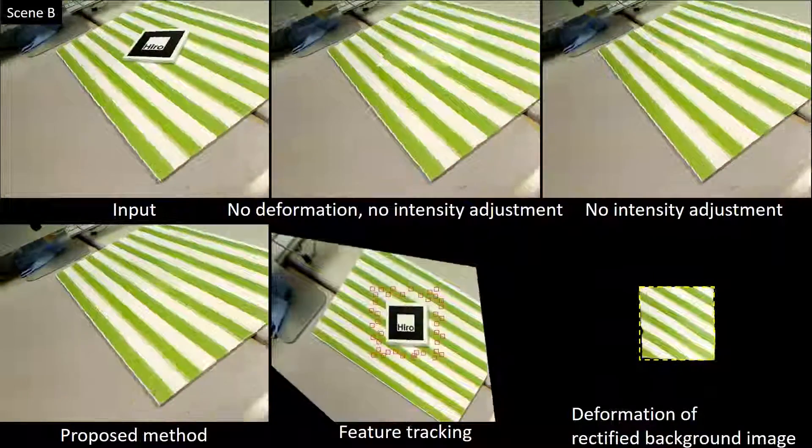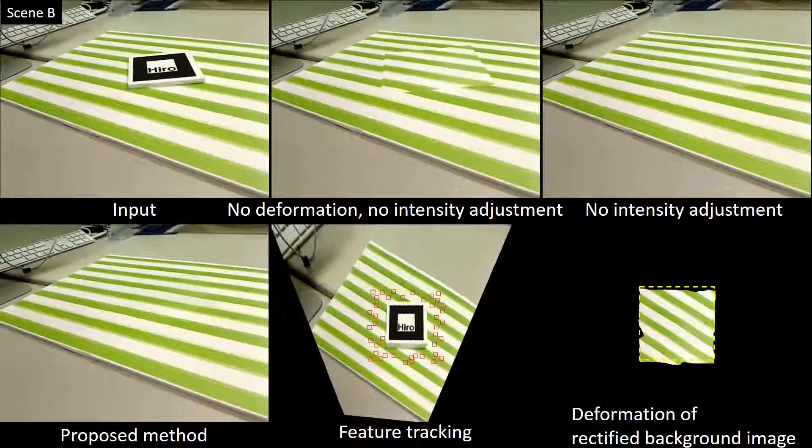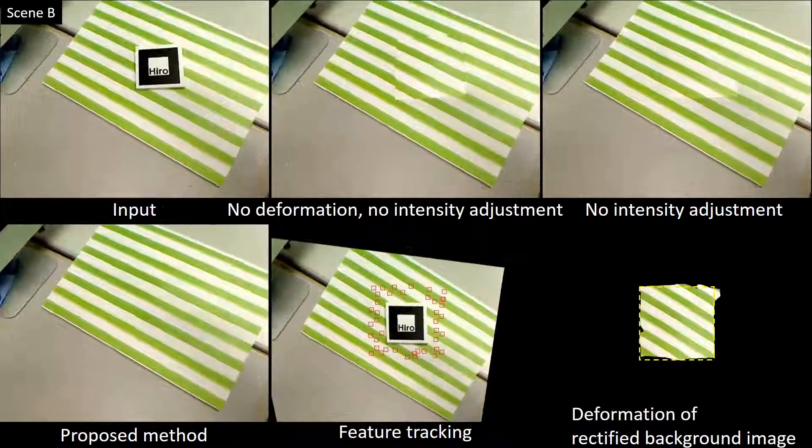Therefore, inaccurate tracking may excessively deform the background image. However, our method can at least compensate for the displacement in the direction orthogonal to the stripe pattern.